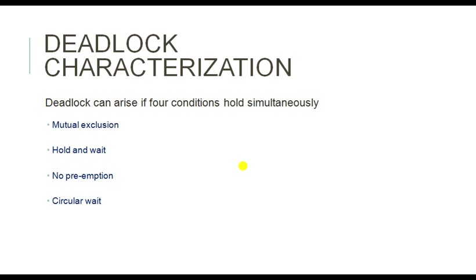Hold and wait means one process is holding one resource — that is, using the services of one resource — while waiting for another resource. If that situation occurs, we may expect a deadlock. No preemption means: even if a high-priority or other process requests the resource that is currently allocated, the operating system cannot preempt that resource, and in that situation deadlock will occur.